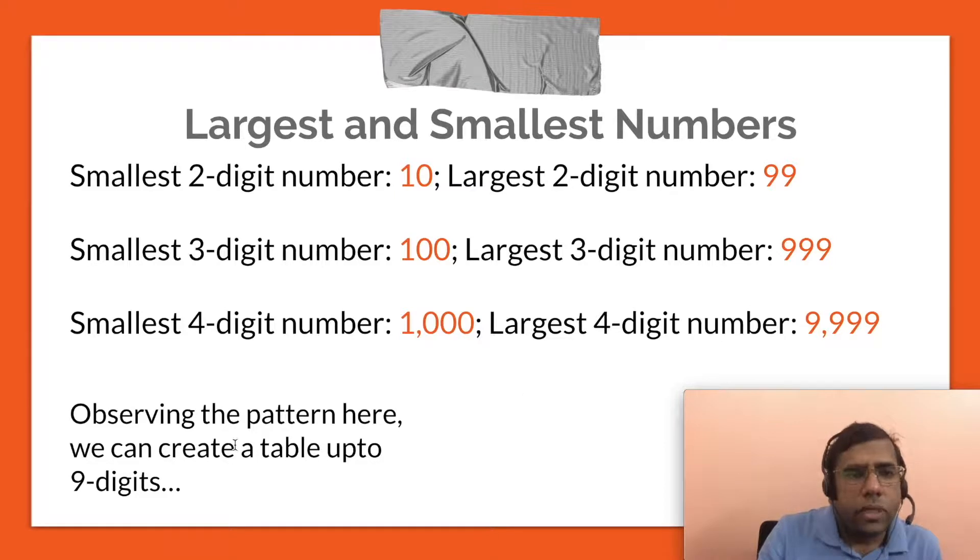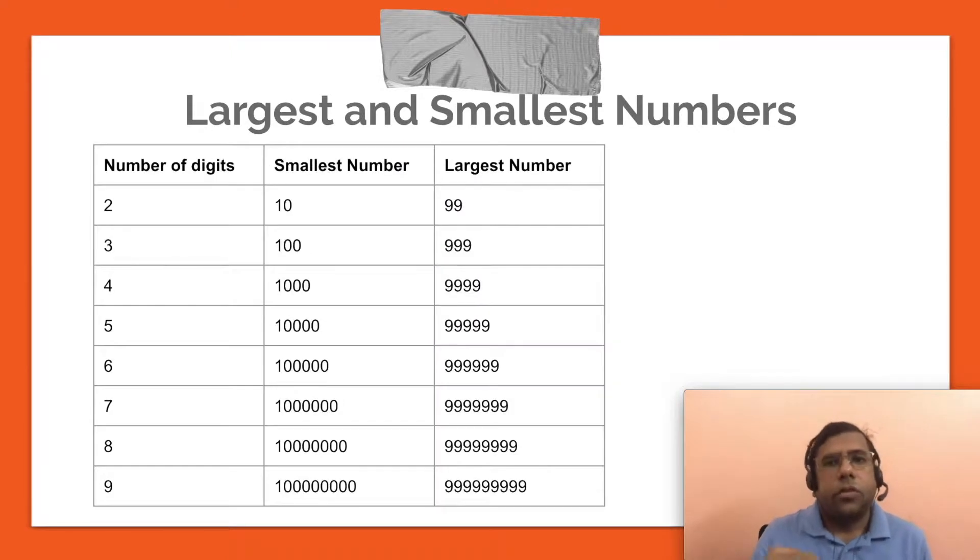So if we just look at this pattern, we can create a table of calculation till nine digits. So the table is something like this. The smallest number of two digits, as we said, is 10. Three digits is 100, four digits is 1000 and so on till nine digits with one followed by eight zeros. And the largest number of that particular digit: two is 99, three is 999, and nine is nine nines. So that's the largest nine digit number.